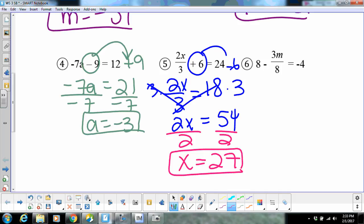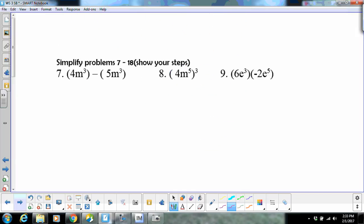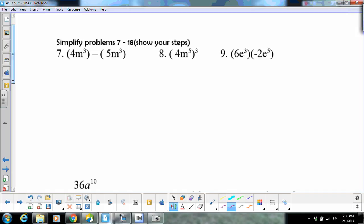Seven through 18, so the rest of your page, are our exponent rules. I'm going to try to kind of just do one of each type. So seven, this is just a subtraction. That subtraction doesn't change anything right here, so we're going to say four minus five, which gives us negative one. Remember I don't write my ones, so technically it would be negative one m to the third, or just negative m to the third.